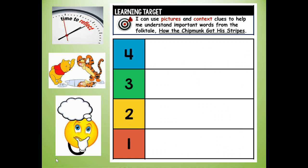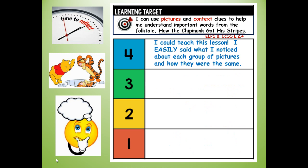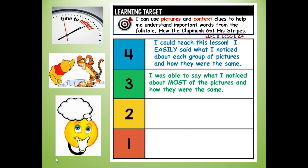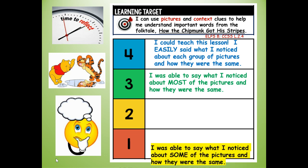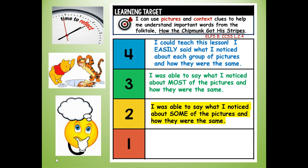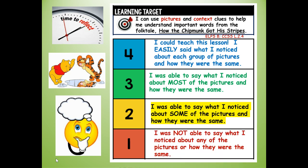At the top of your page, let's reflect and review our learning target: I can use pictures and context clues to help me understand important words from the folktale How the Chipmunk Got His Stripes. Would you give yourself a four? — I could teach this lesson. A three? — I was able to say what I noticed about most of the pictures. A two? — I was able to say what I noticed about some pictures. Or a one? — I was not able to say what I noticed. Thank you boys and girls for doing the vocabulary words and pictures with me — have a great day!